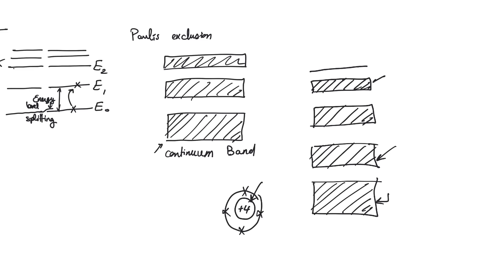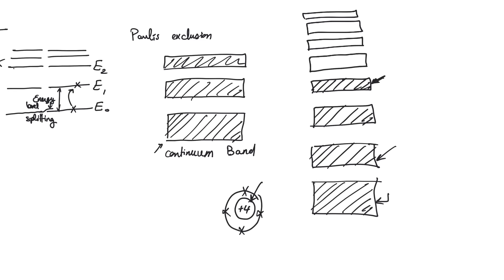These full energy bands represent the internal electrons. Then finally we observe one last full band — full meaning every available energy state is occupied by an electron. After that we start to observe empty energy bands. This final full band represents the energy levels corresponding to the outer orbital electrons, which in a crystal participate in forming covalent bonds. We call this band the valence band.